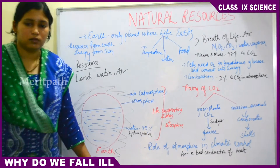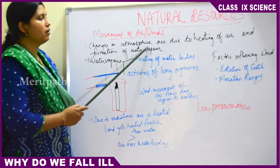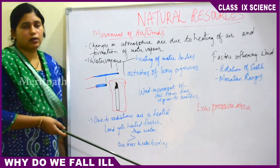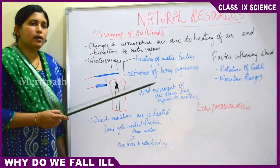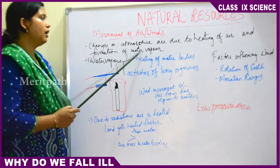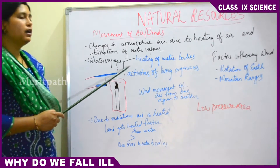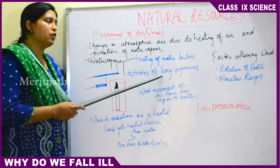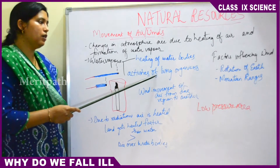Next, let's look at movement of air, or wind. Changes in the atmosphere occur due to heating of the air and formation of water vapor. Due to radiations from the earth and rays from the sun, the air is heated. Water vapor is formed by two activities: either heating of water bodies like rivers, seas, and lakes, or activities of living organisms.